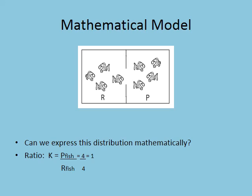A capital K indicates the equilibrium constant, and it's always expressed as products over reactants. For our simple situation here, it's the number of product fish over reactant fish, so it's four over four. My equilibrium constant for fish in a divided aquarium is equal to one. The ratio is always the same, one to one.